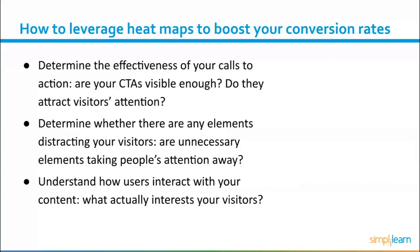Heat maps can also show you whether too many unnecessary elements are taking up people's attention and moving it away from the elements you want them to notice, such as a call to action button or a specific piece of content like a product video. You can also understand how users interact with your content. Content can be a very powerful conversion tool as it helps build trust and keeps people on your website for longer. Mouse tracking and scroll maps show you which parts actually interest your visitors so you can use this knowledge to improve your content and the pages where your content resides.